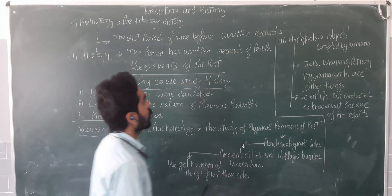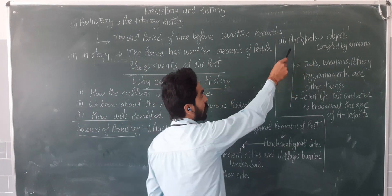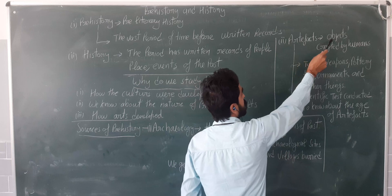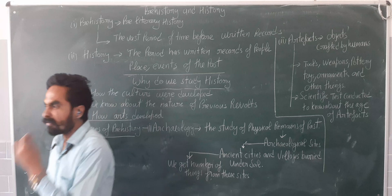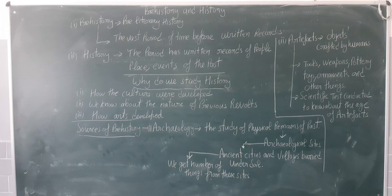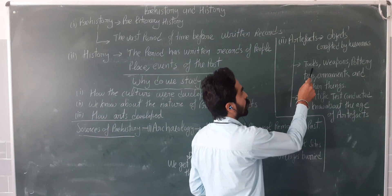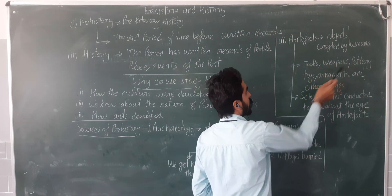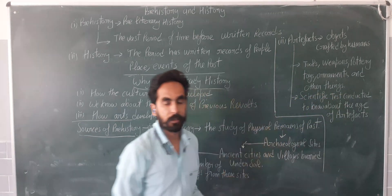We also learned about artifacts. What are artifacts? These are objects crafted by humans — things made by humans. In artifacts we can include tools, temples, pottery, toys, ornaments, and other things. So these are the artifacts.